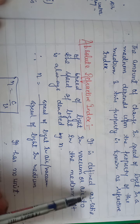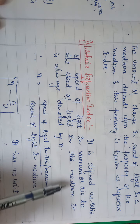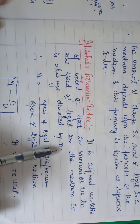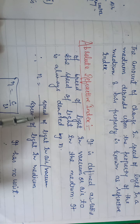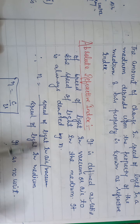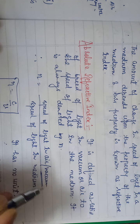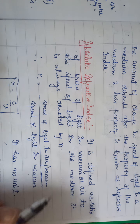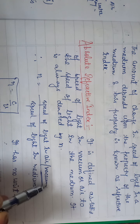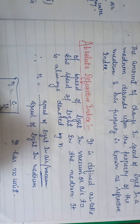Refractive index is of two types. The first one is absolute refractive index. It is defined as the ratio of the speed of light in vacuum or air to the speed of light in a medium. It is always denoted by small n. So the formula becomes: n equals the speed of light in vacuum or air — denoted by c — upon the speed of light in any medium — denoted by v. The formula becomes n equals c upon v.